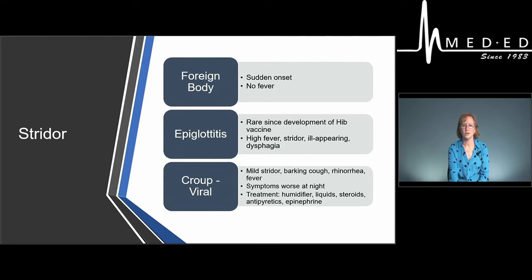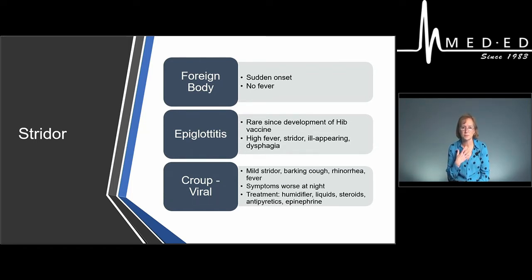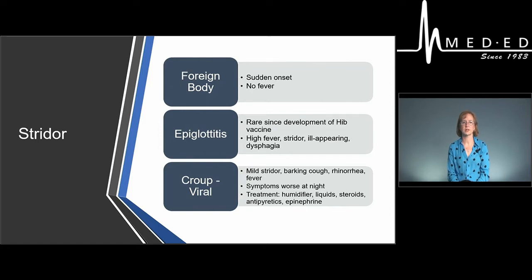Epiglottitis is not seen a whole lot anymore. The primary causative organism used to be Haemophilus influenzae B, which we now vaccinate against, but sometimes you will still see atypical cases. These children present very ill — in a leaning forward, neutral sniff position, trying to keep their airway open. On a soft tissue neck X-ray, the epiglottis will be hugely enlarged, like the size of a thumb, causing the thumb sign. This is a high-risk airway situation. If there's any suspicion, maintain the child in a position of comfort and move quickly to airway evaluation and intervention.